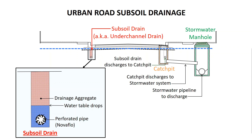Therefore we want to keep the water out of the sub-base and base course layers as much as possible, and in fact we need it below the level of the sub-grade as well, because it can soften and compress when it's wet. We do that by installing sub-soil drains under the road.